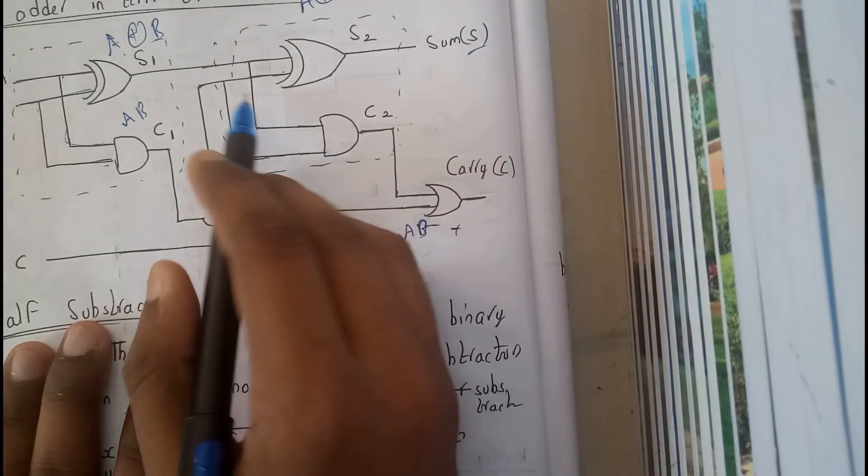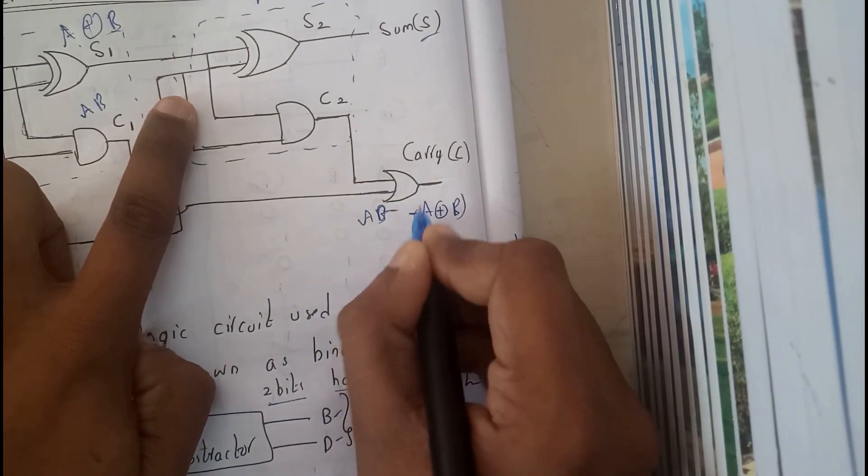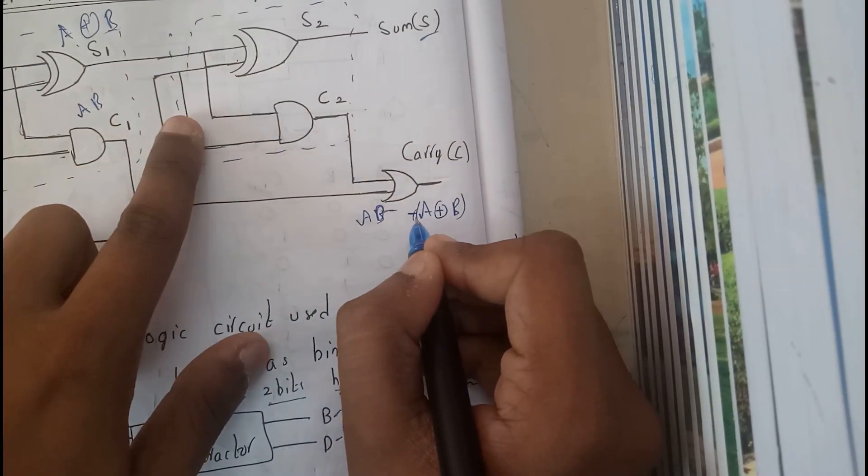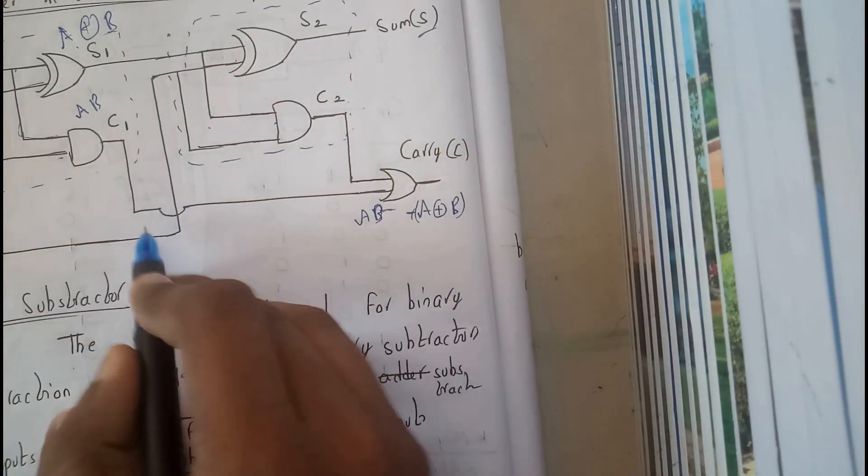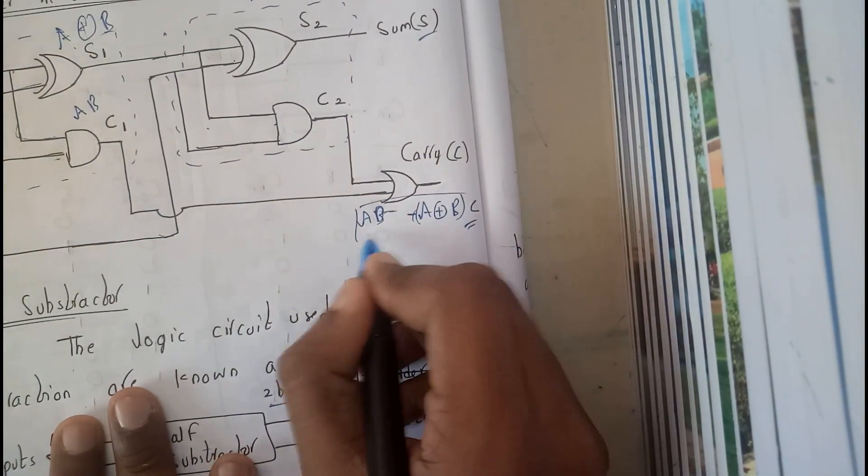These two are nothing but A exclusive or B into this one. This is nothing but C. So this will be our carry part and this will be our sum part.